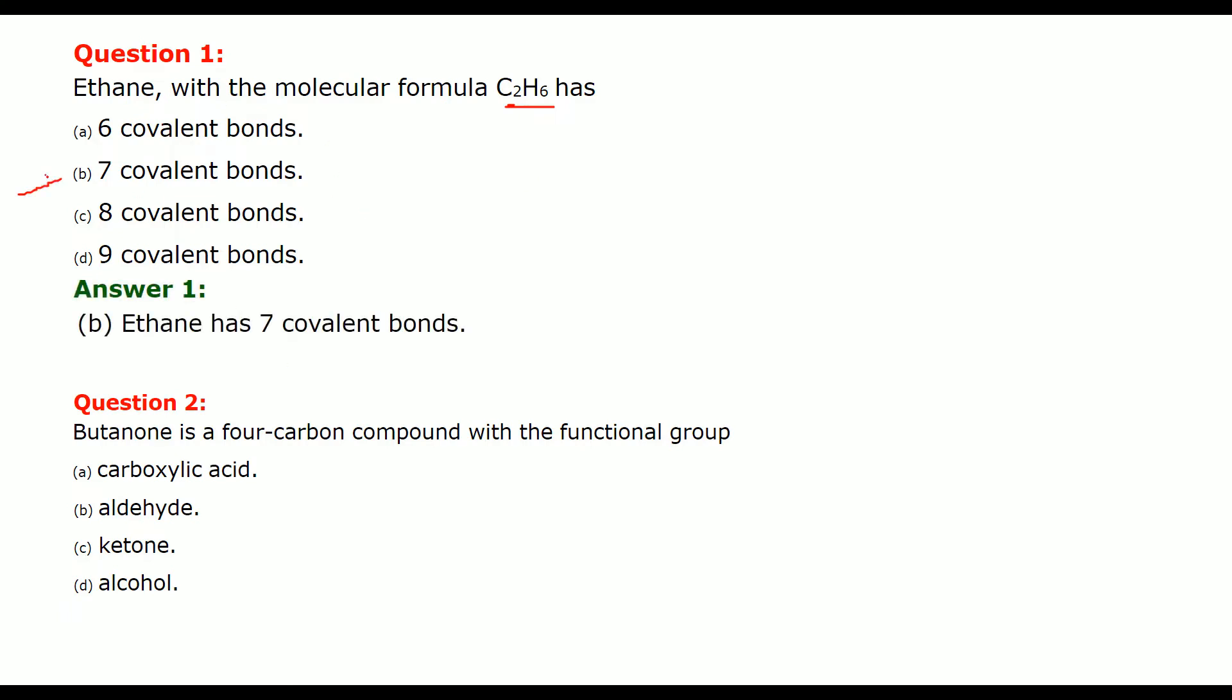The answer is 7 covalent bonds. We will see about this, how these are seven because there are certain questions relating to this. Butanone is a 4 carbon compound with functional group ketone. Ketone is the answer. So the functional group of butanone is ketone.